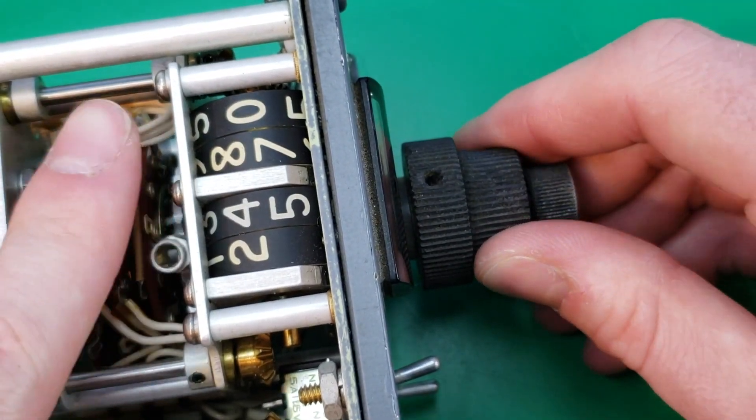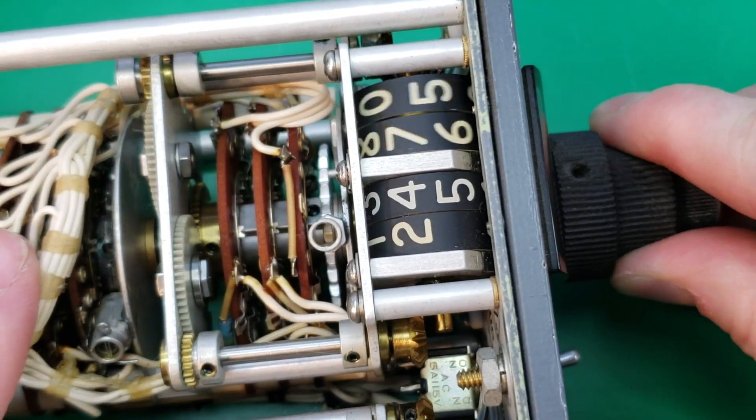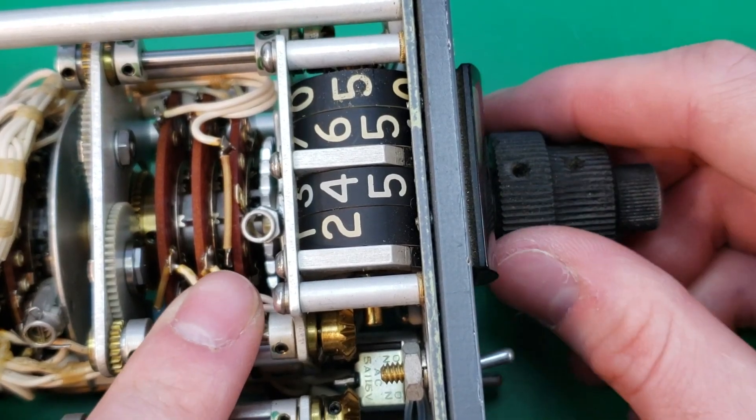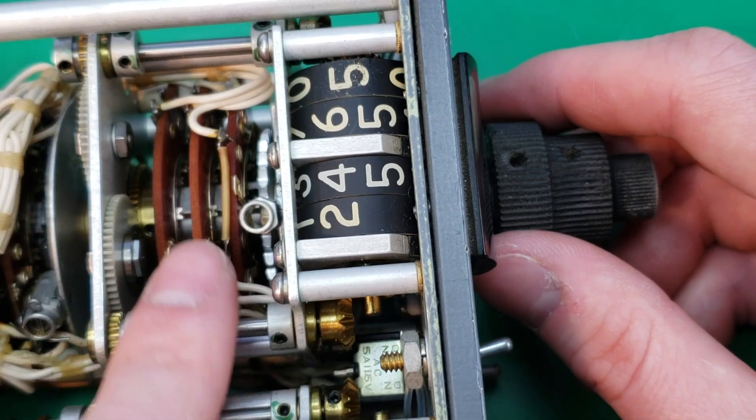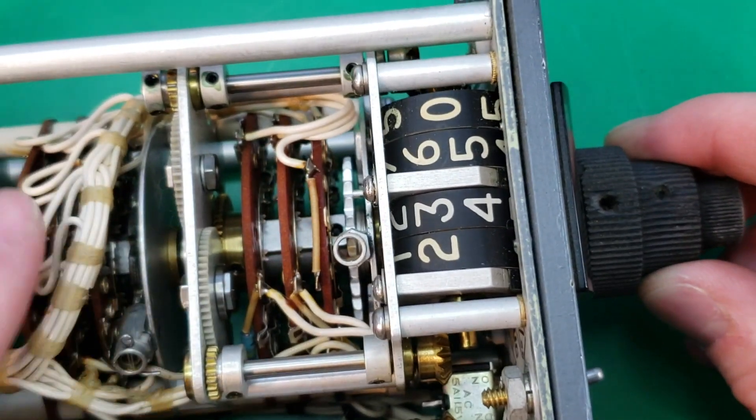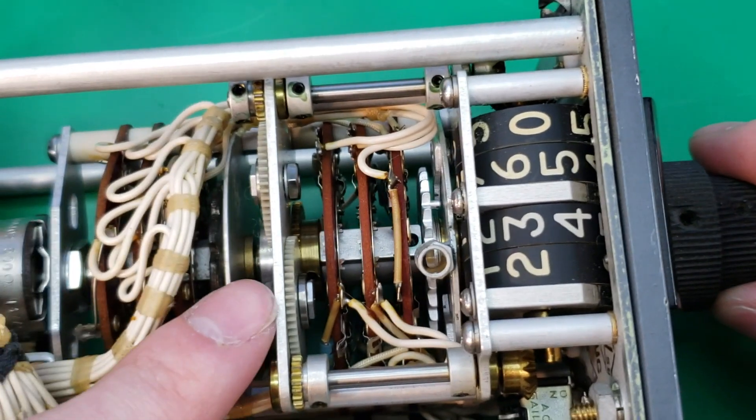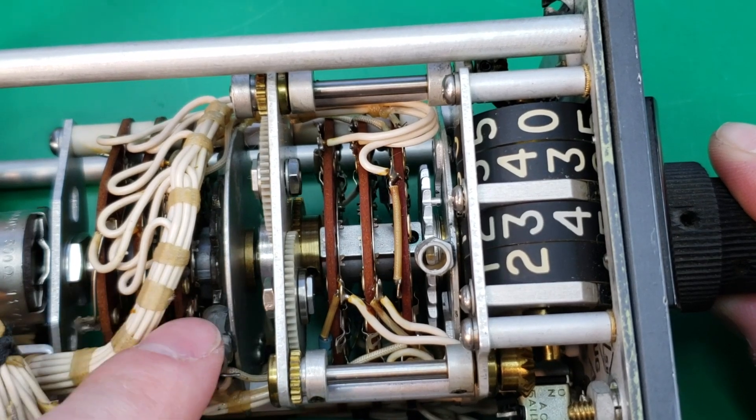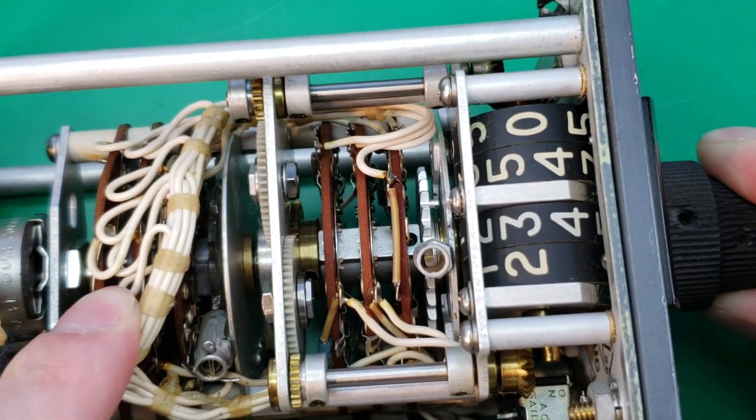The knob for the whole numbers here rotates these three wafer switches and the knob here for the decimals rotates this shaft and this gear. And it corresponds with these three wafer switches back behind the first ones.